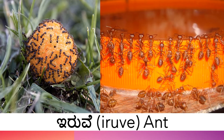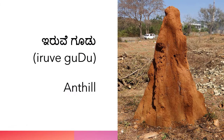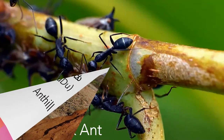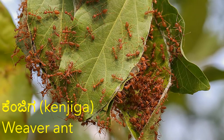Iruwe — Ant. Iruwe Goodu — Ant Hill. Godda — Large Black Ant. Kenjaga — Weaver Ant.